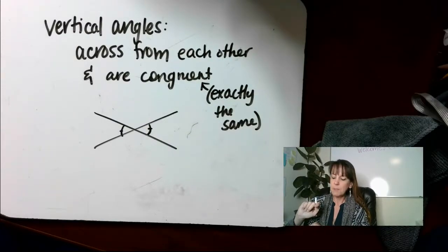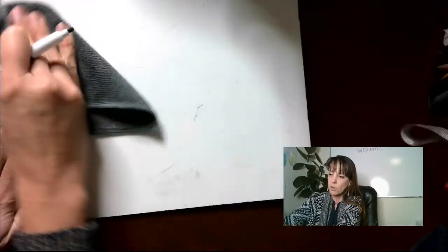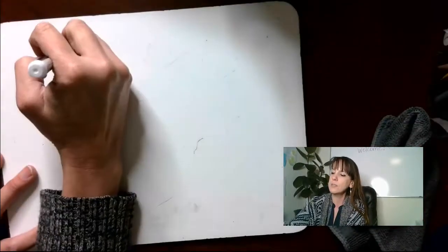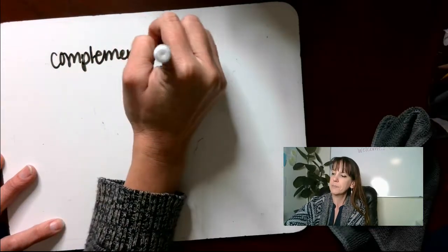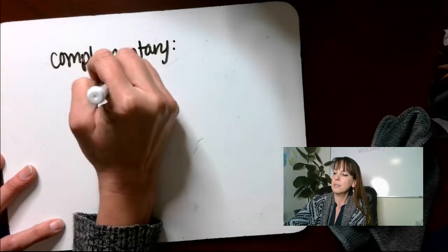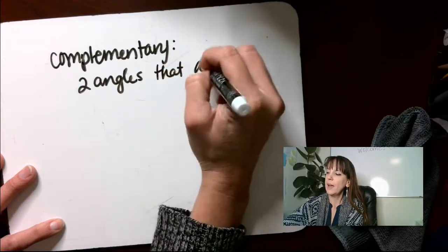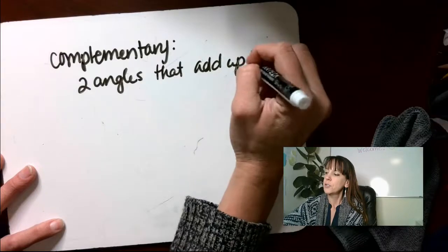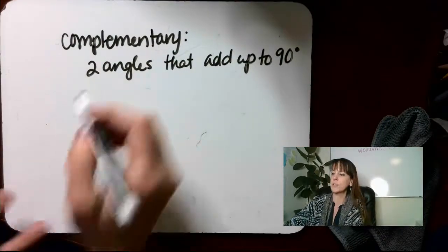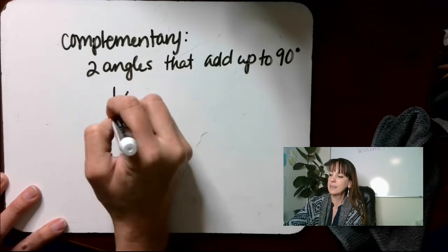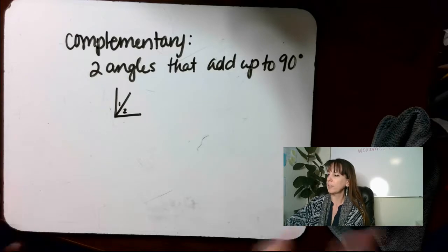Another term is complementary angles. We said two angles that add up to 180 degrees are supplementary. Complementary angles are two angles that add up to 90 degrees. So if we have angle one and angle two and they added up to 90 degrees, those would be complementary angles.